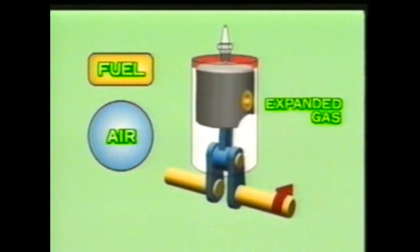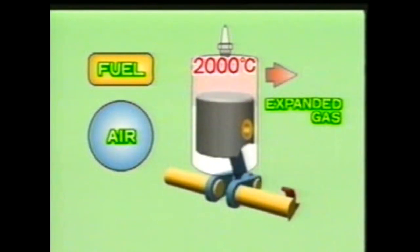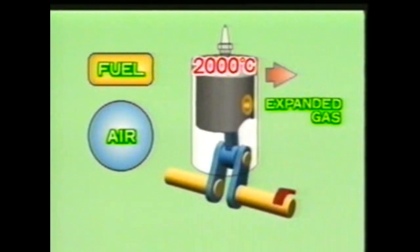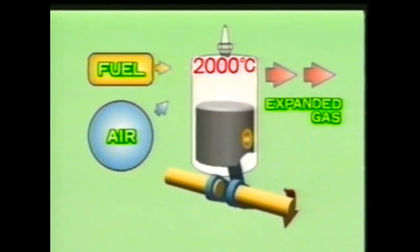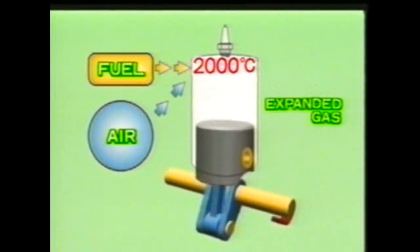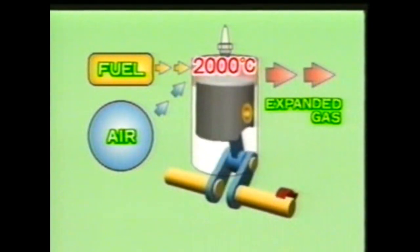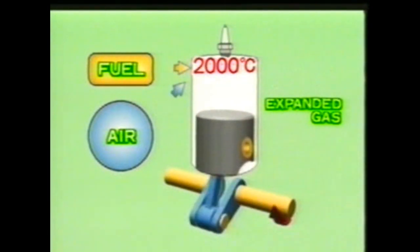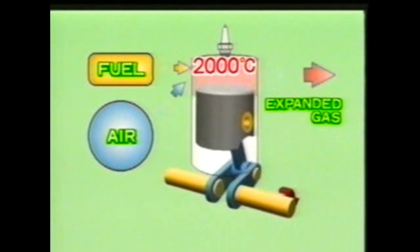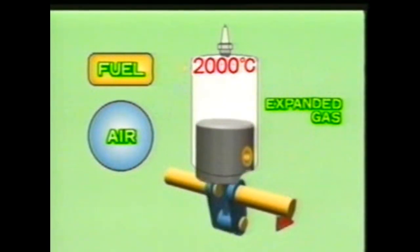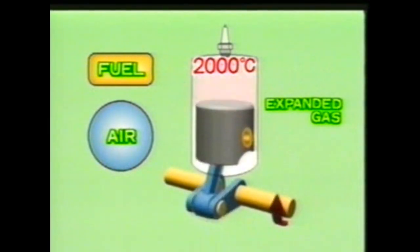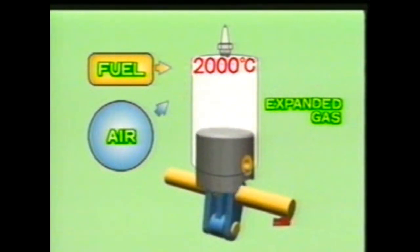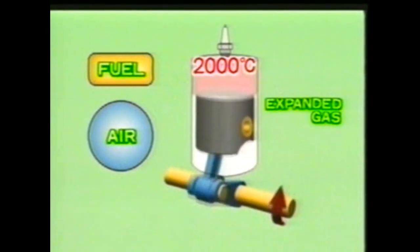The temperature of exhaust gases can reach 2,000 degrees centigrade. If the engine were left to cool by itself by natural heat transfer, overheating would cause the expansion of engine parts and insufficient lubrication would also result. It is necessary to have a cooling system to maintain the engine at its optimum temperature.